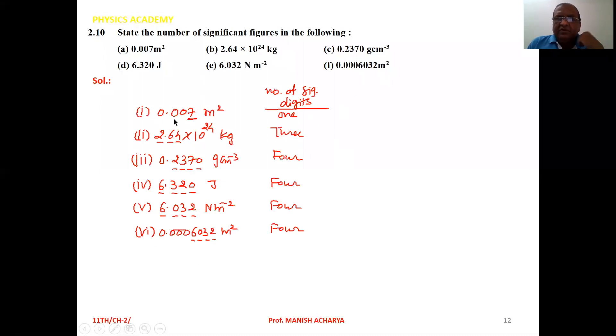First one, 0.007 m². So in this one the number of significant digits is one only. We have to remember the rules for significant figures. The zeros after decimal point and before first non-zero digit are non-significant. So in this one, only one.